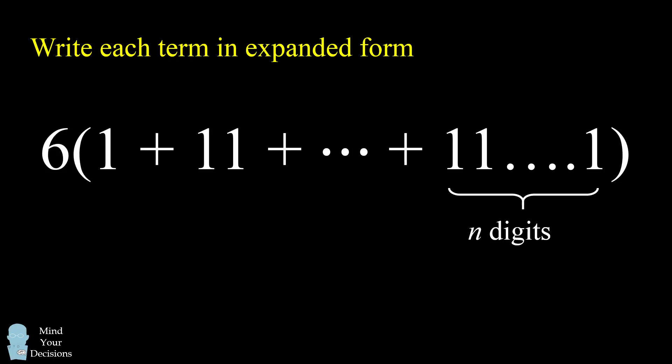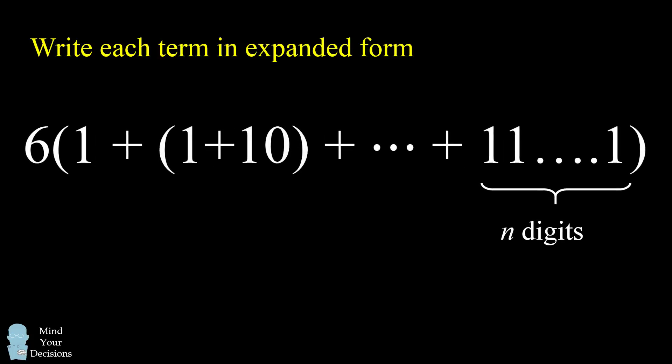We now write out each term in expanded form. So 1 stays as 1, but 11 will become 1 plus 10. Similarly, the next term, which would be 111, will be 1 plus 10 plus 100. And we continue writing this all the way until the very last term, which is only one for n digits. So what would be the expanded form of this? We'd basically be adding up the powers of 10, 1 plus 10 plus 100 plus so on, all the way up to 10 to the power of n minus 1.